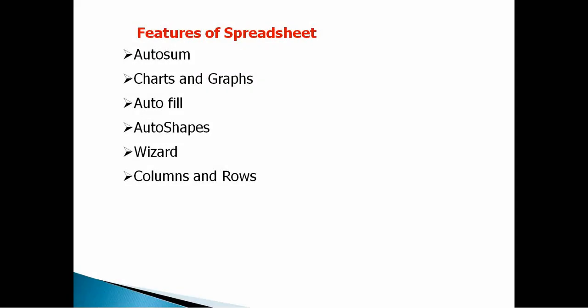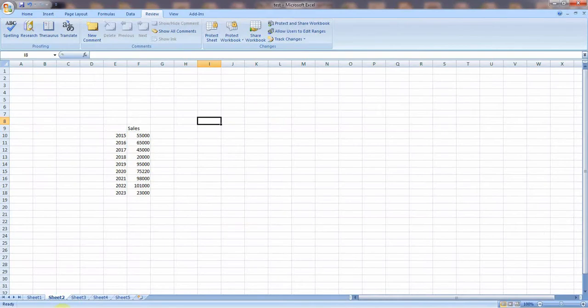Now let's see the important features of spreadsheet software. In most spreadsheet software you will see auto sum, that means automatic calculations. We can also create charts and graphs. There is an auto fill option, meaning some information can be filled automatically. We can create auto shapes, and there are various wizards for creating functions or formulas. You will also see columns and rows in the spreadsheet.